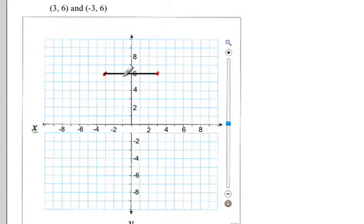Here, there is no rise. When we go from this point to this point, we're neither going up or down. So the rise here is 0, and the run is equal to 6, because we're going from negative 3 up to 3, so we're going over 6.